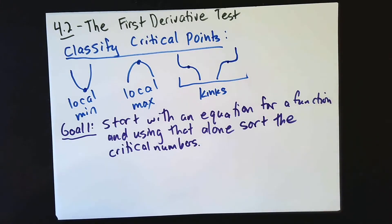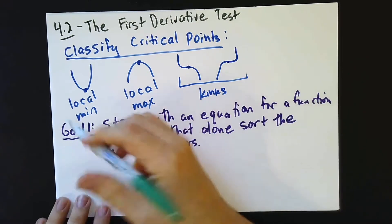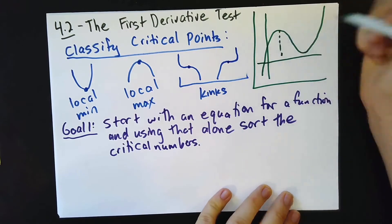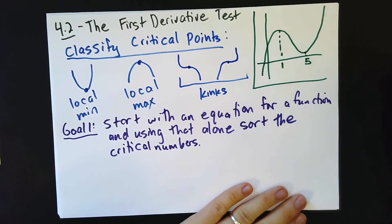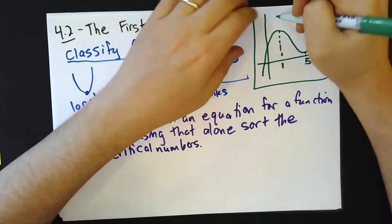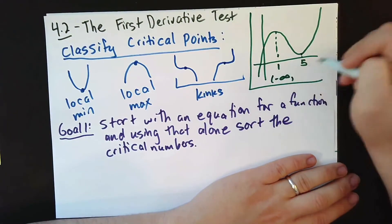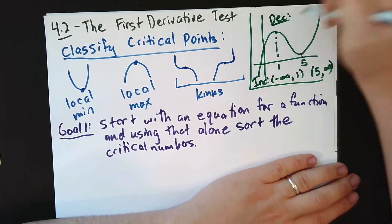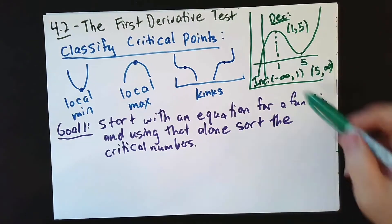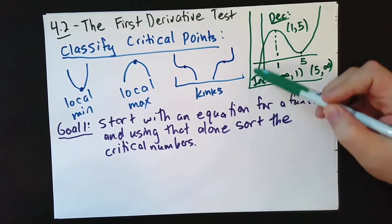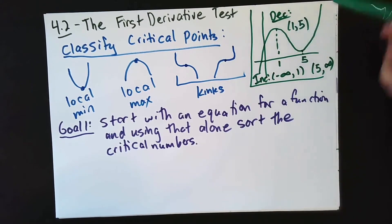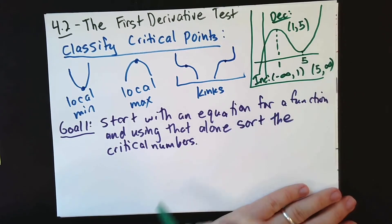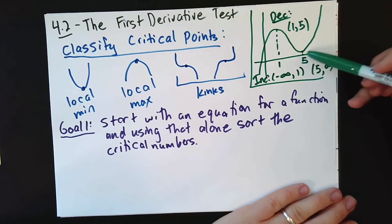Our second goal consists of talking about increasing and decreasing. We'd like to be able to identify where a function is increasing and where it's decreasing. For example, a function might be increasing on negative infinity to 1 and 5 to infinity, and decreasing on 1 to 5. This 1 to 5 is not a coordinate point — it's an interval referring to inputs between 1 and 5.